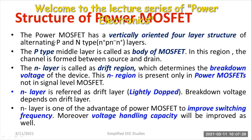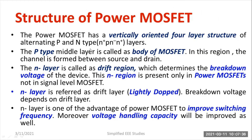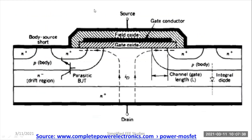First and foremost, the power MOSFET has a vertically oriented 4-layer structure of alternating P and N type layers. It has an N plus layer first, then a P layer second, then an N minus layer, and finally an N plus layer. This N plus layer repeats at the top and bottom side — we can observe this vertical structure.